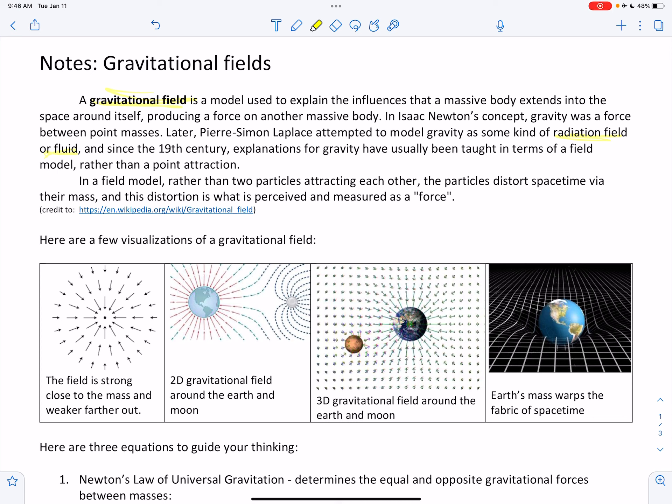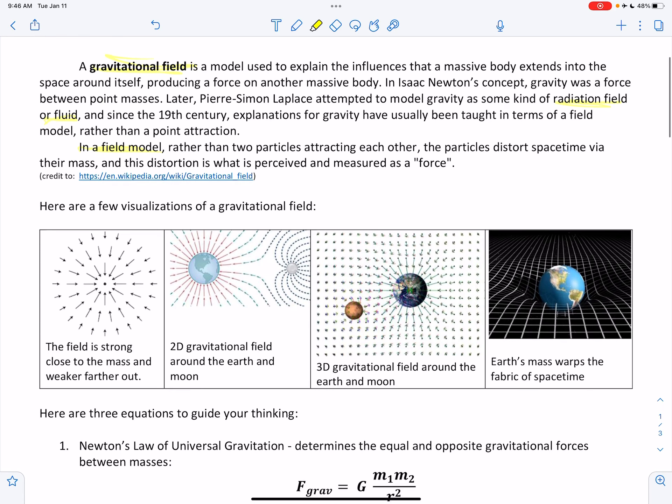In a field model, rather than two particles attracting each other, the particles distort spacetime via their mass, and this distortion is what is perceived and measured as a force. So what might a gravitational field look like?